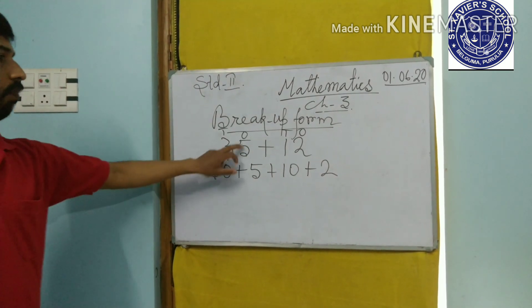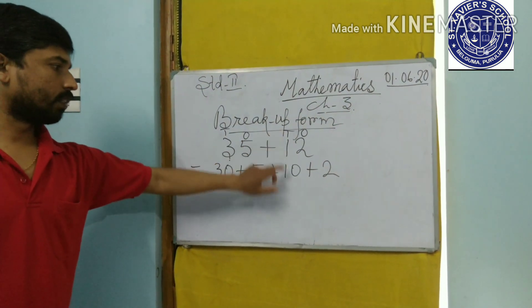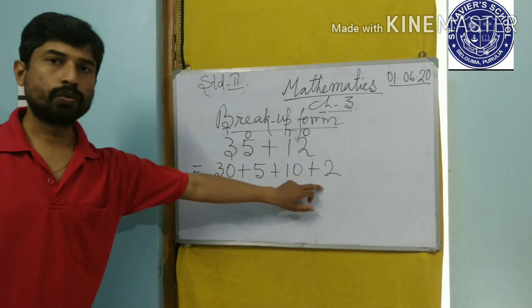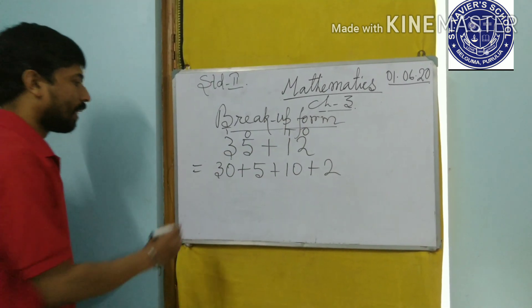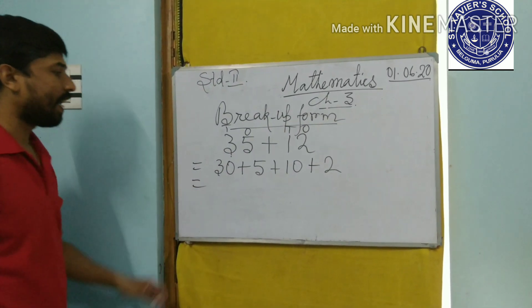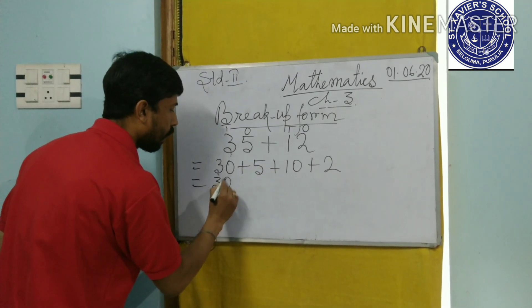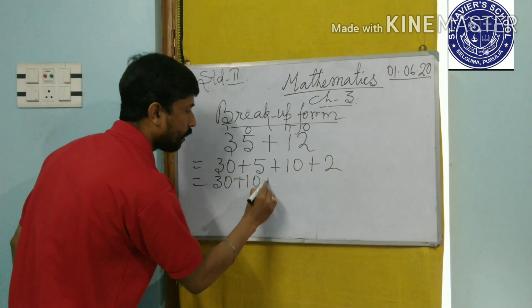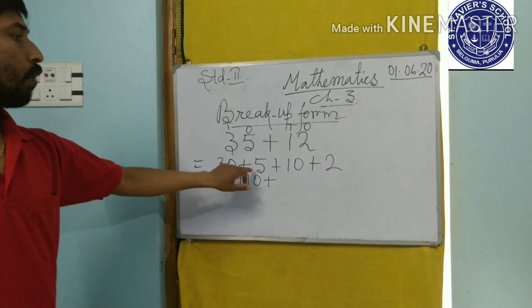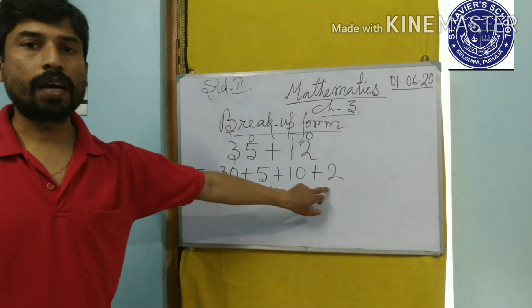So see, 3 tens means 30, 5 ones is 5. 1 ten means 10, 2 ones is 2. So now first, what we will do? We will add the tens. That is, 30 plus 10. And after that, we will write the numbers in 1's place, 5 plus 2.